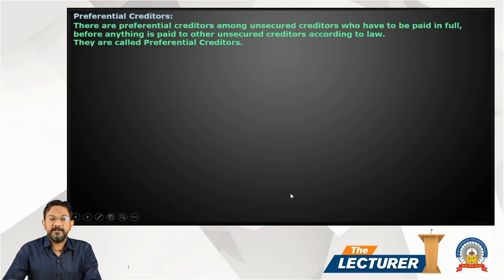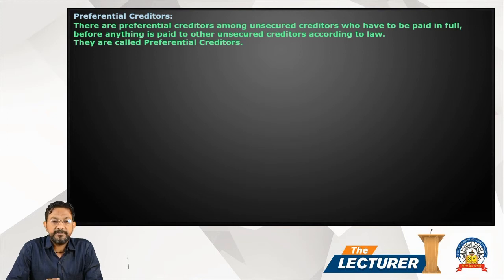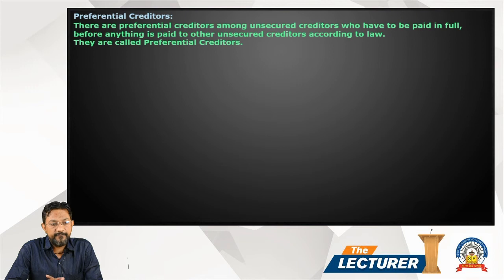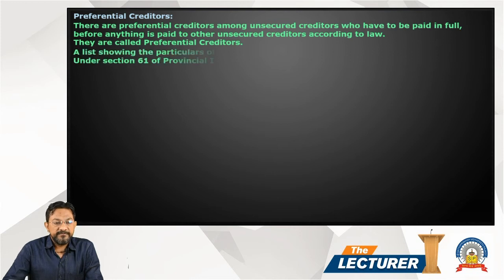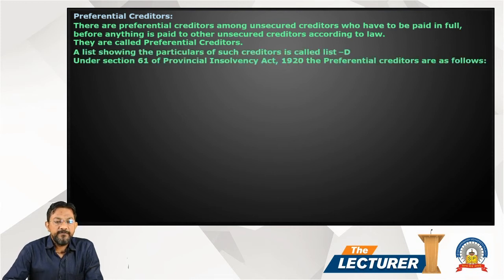Another point is preferential creditors. There are preferential creditors among unsecured creditors who have to be paid in full. We have to fully pay them before anything is paid to other unsecured creditors according to law. A list showing the particulars of such creditors is called List D.